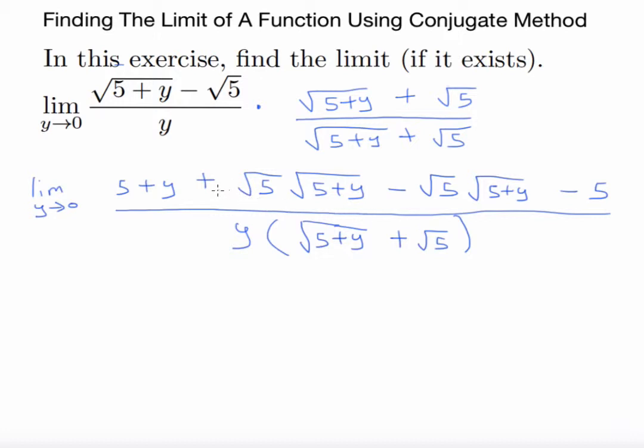It's the top part that will end up simplifying. You have minus 5 and you have 5 - those will cancel. So you have plus √5√(5+y) and then you have the negative form here. So in essence...